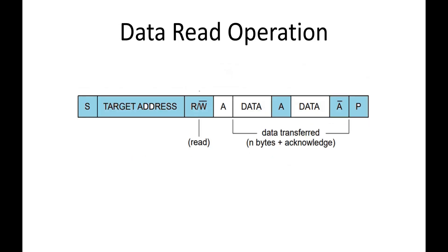This diagram shows a data read operation, and I want to ask you a question also. In this read operation, the read is initiated by the master using the start condition, then the target slave address is given — which is 7 bits long — and the read/write bit for the read operation is set to 1.